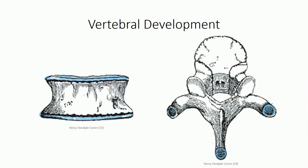In addition to the primary ossification centers, there are also five secondary ossification centers that appear later along the superior and inferior margins of the compact bone collar of the vertebral bodies and at the tips of the spinous and transverse processes. The annular ossification centers are responsible for the growth and height of the vertebral column, while the other centers contribute to growth of processes in response to muscular pull. Note the distinct lines denoting incomplete fusion of the neurocentral joint, suggesting the depiction of a relatively immature vertebra.